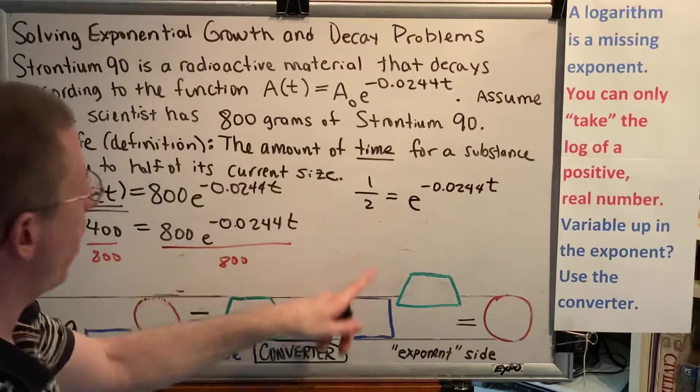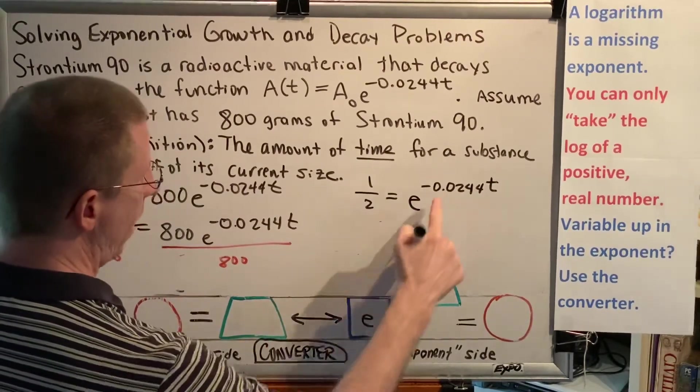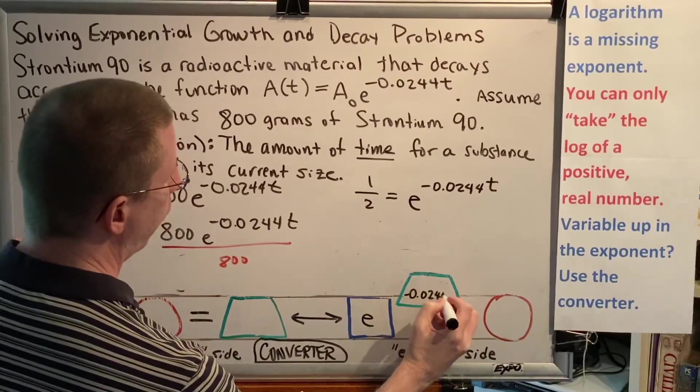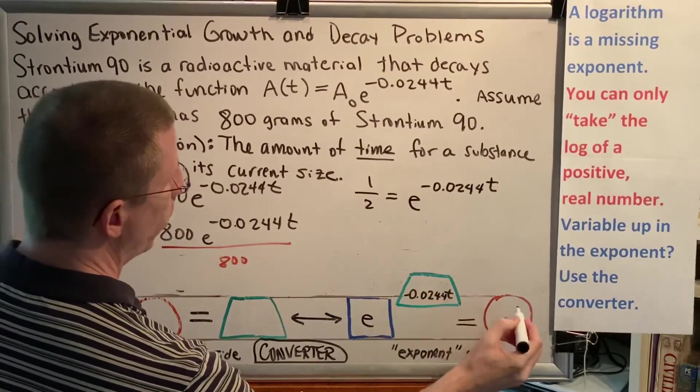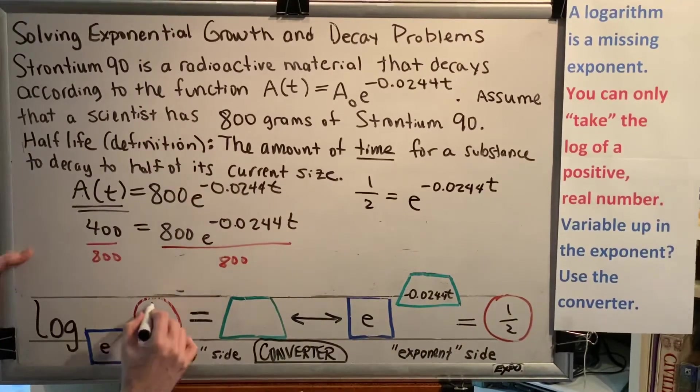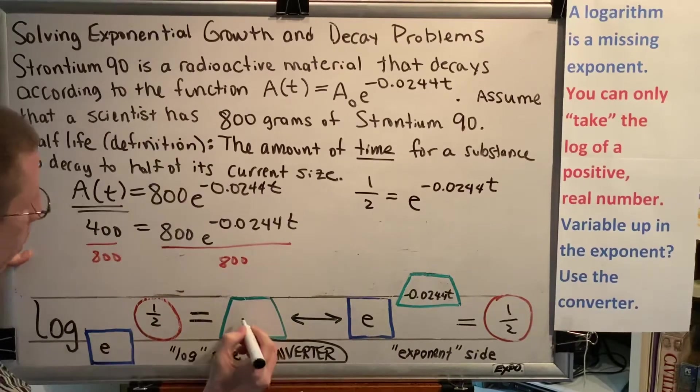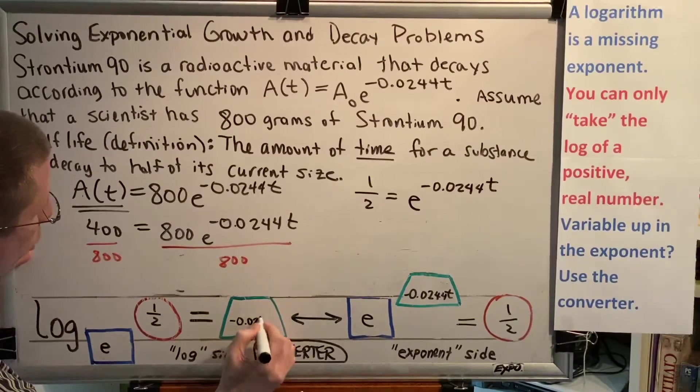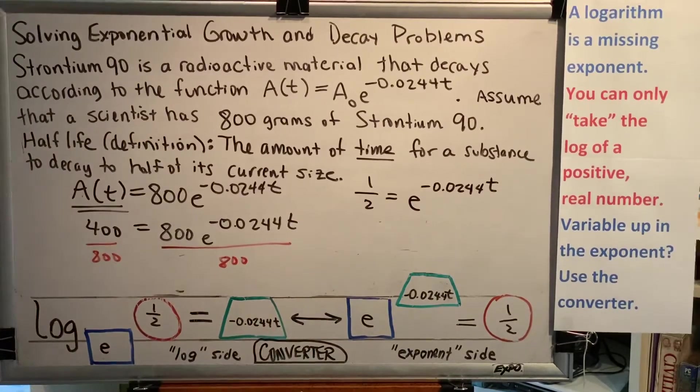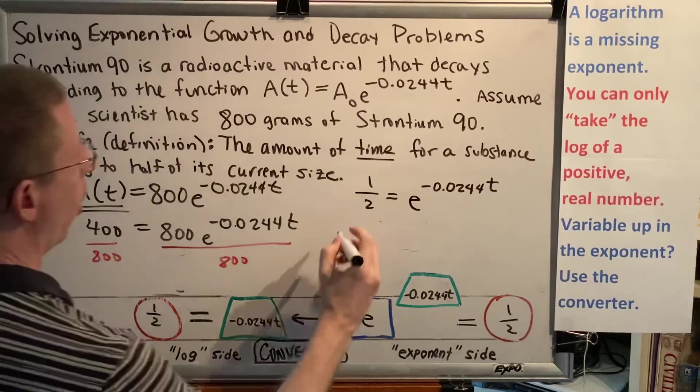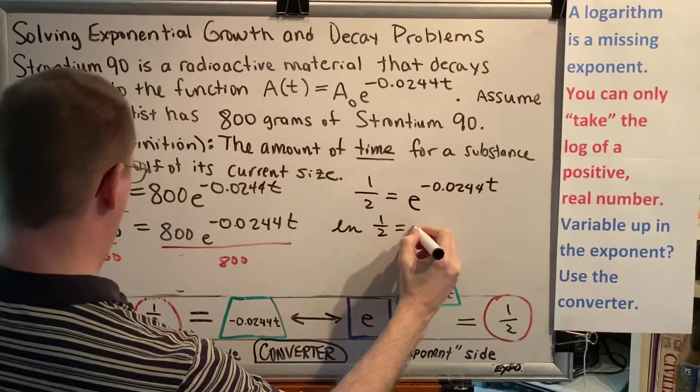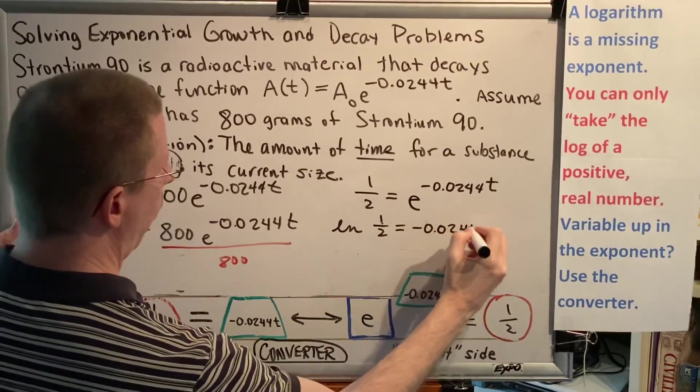Okay, so now that we're ready to use our converter, the base is e, the exponent is negative 0.0244t, and the argument is one half. Matching up the colors and shapes, we get log base e of one half equals negative 0.0244t. And because log base e is a natural log, I can write the natural log of one half equals negative 0.0244t.